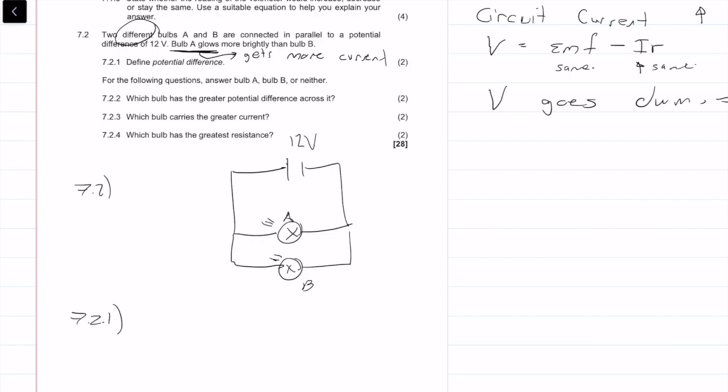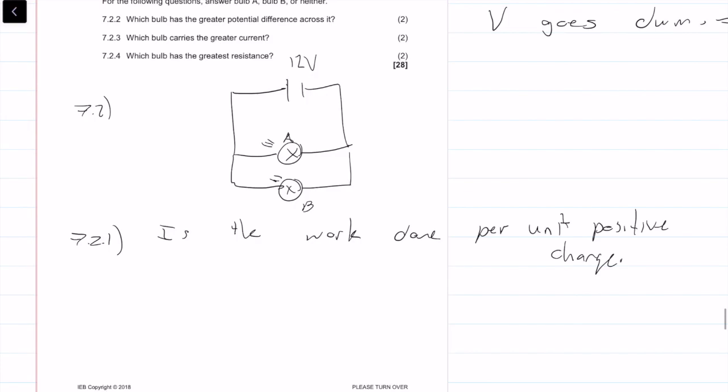7.2 point 1: Another definition, so that's four definitions in this question alone. Potential difference is the work done per unit positive charge.